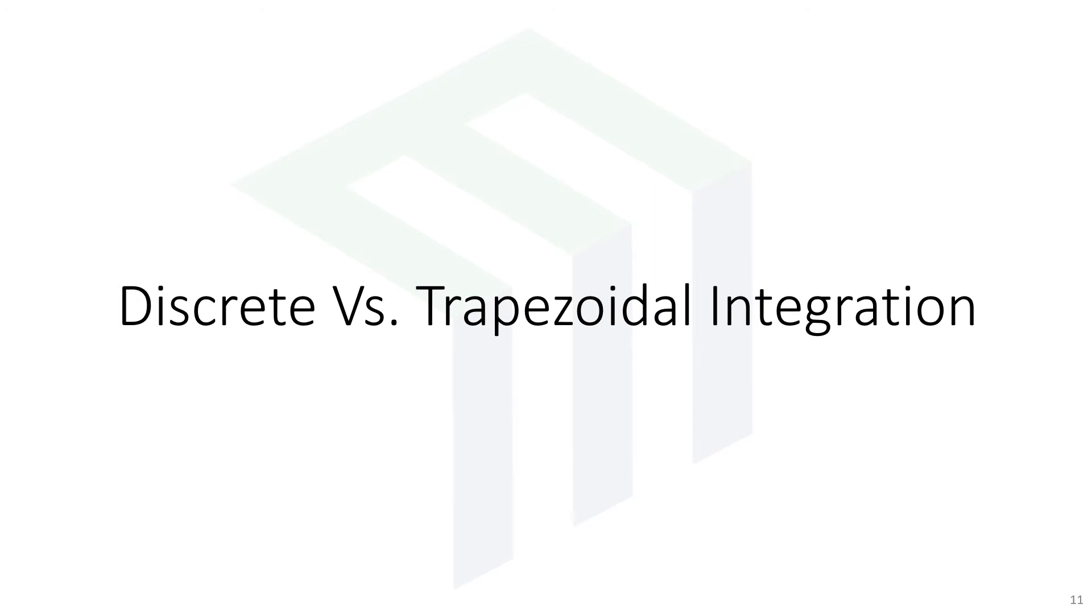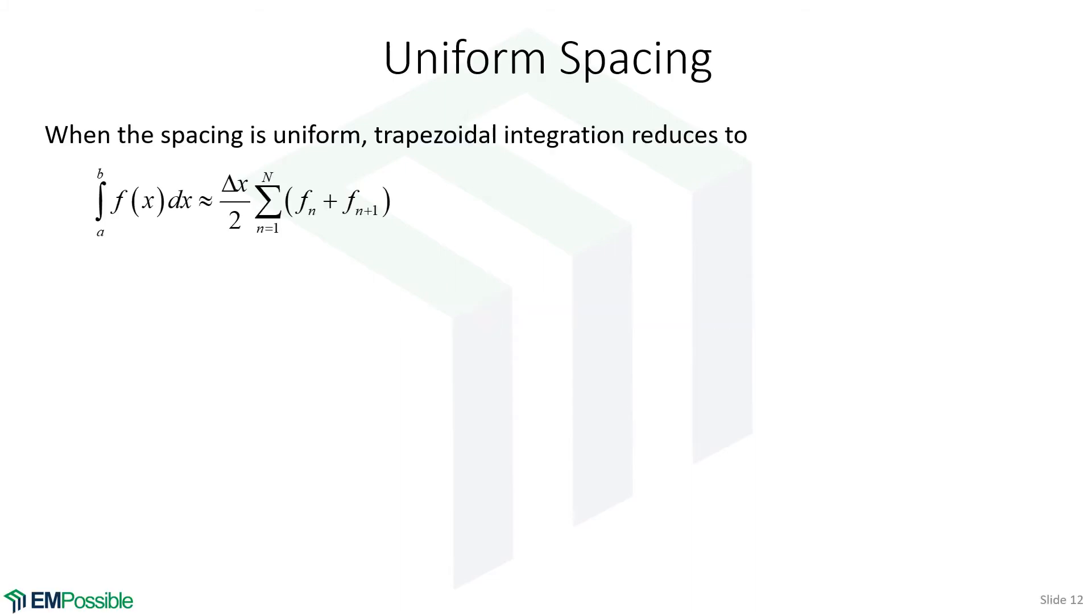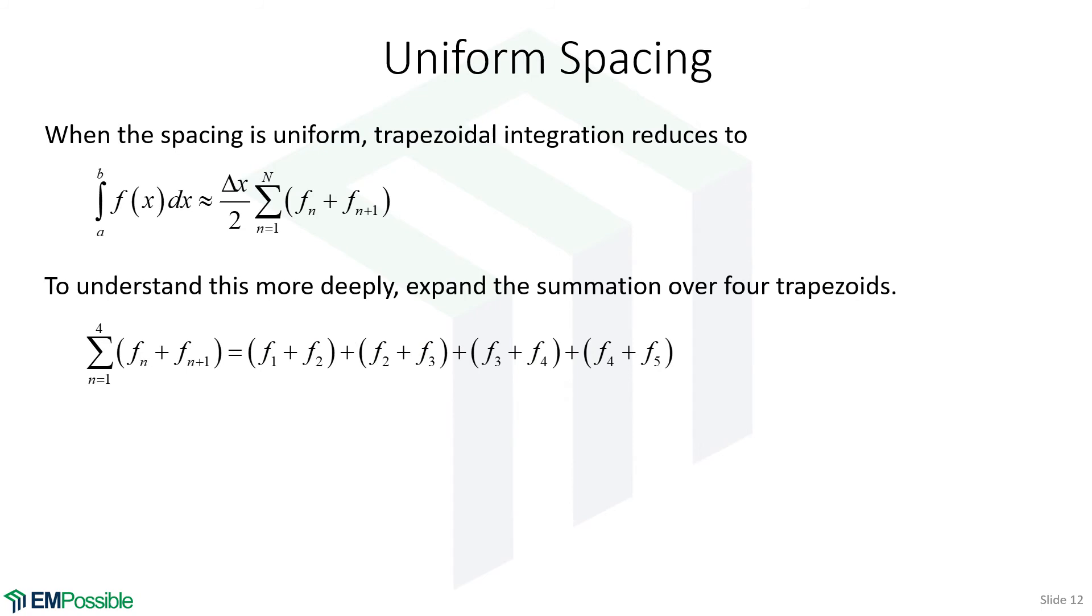Now I want to compare discrete versus trapezoidal integration. So let's just look at the case of uniform spacing. Here's our equation for trapezoidal integration, where this capital N is the number of trapezoids. But notice, since we have a left and a right-hand side of the trapezoid, we have a function value that will be big N plus 1. That'll be at the far right-hand side of our series of points describing the function. So N is not number of points here, it's number of trapezoids.